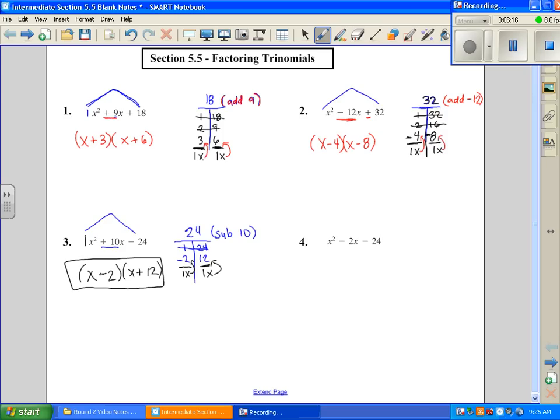Okay, and then we have number 4. We're going to multiply to give us our outside. So that's negative, that's going to be 24. And then we want it, since this sign is negative in front of it, we want it to subtract to give us our inside number. Subtract to give us a negative 2.